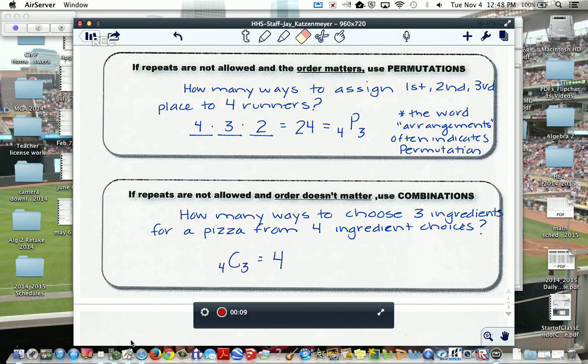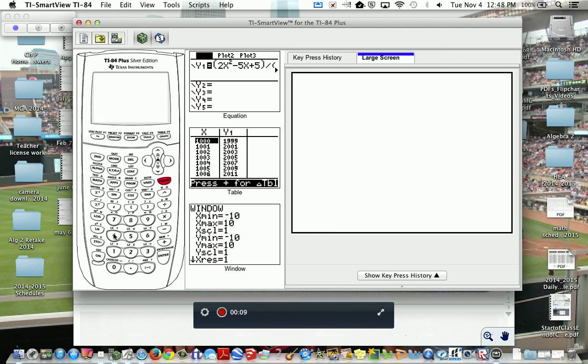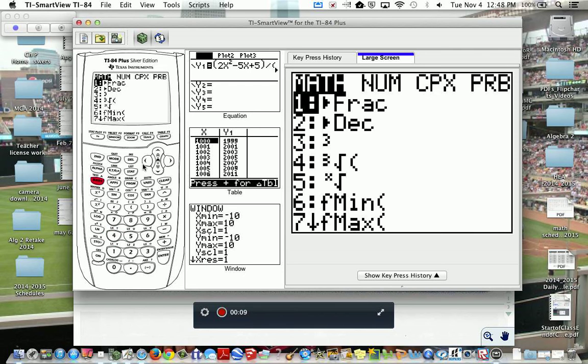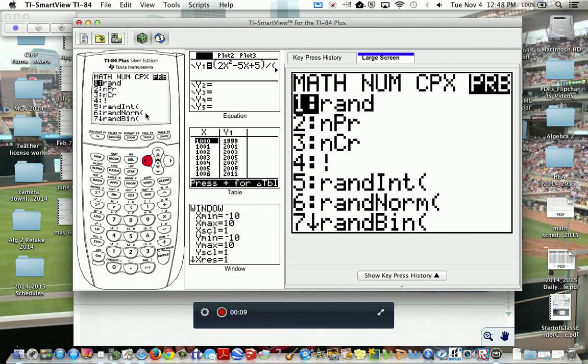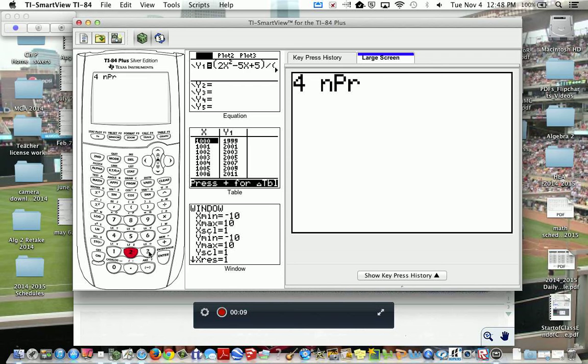A way to do this is to do a permutation, and when you do permutations on the calculator, you're going to type in the total number that you can choose from, so in this case there are four runners, go to math, slide over to the PRB menu, and you can see number two is permutation, and now we're going to assign them first, second, or third place. So four runners, three places, there's a four, permutation three, and you get 24.